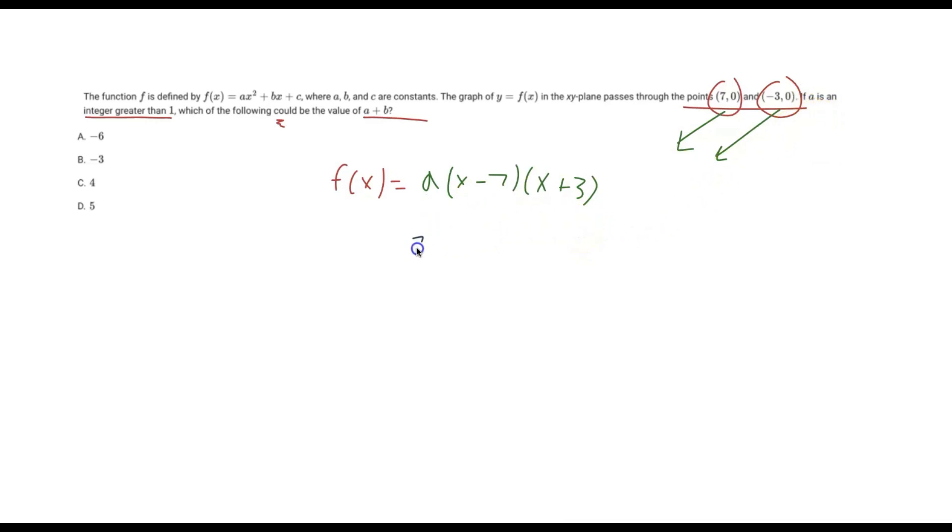Well, 2. So I'll just have a value of 2 for a. So then we have 2 times (x - 7) times (x + 3).